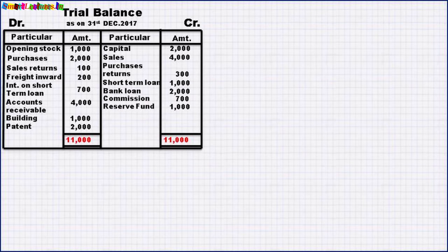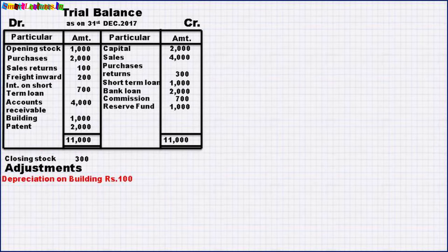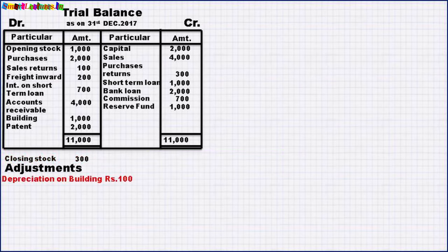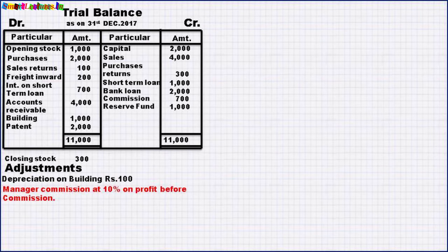Adjustments means the additional information below the trial balance. Closing stock 300, and depreciation on building 100. Be careful — this closing stock is as on 31st December 2017, that is 300. The next adjustment is depreciation on building 100. Managers commission at 10% on profit before commission means we have to provide commission to the manager at the rate of 10% of the profit before calculating this commission.